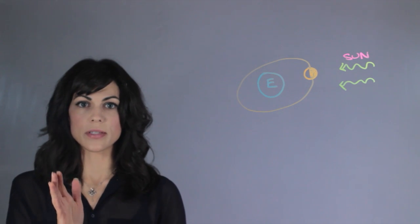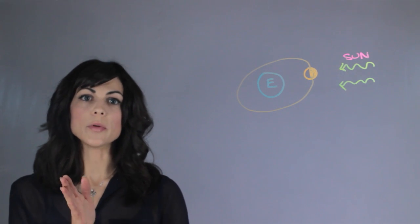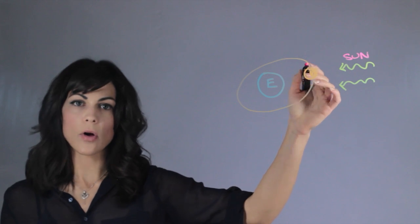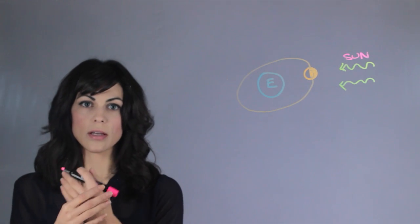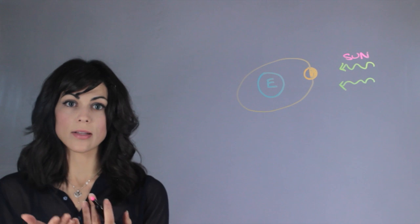So generally we think that we see 50% of the moon because the same side is always facing us because we have something called tidally locked.